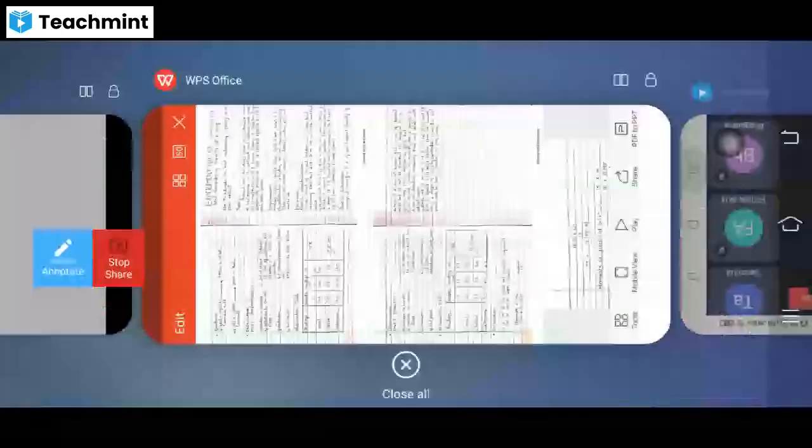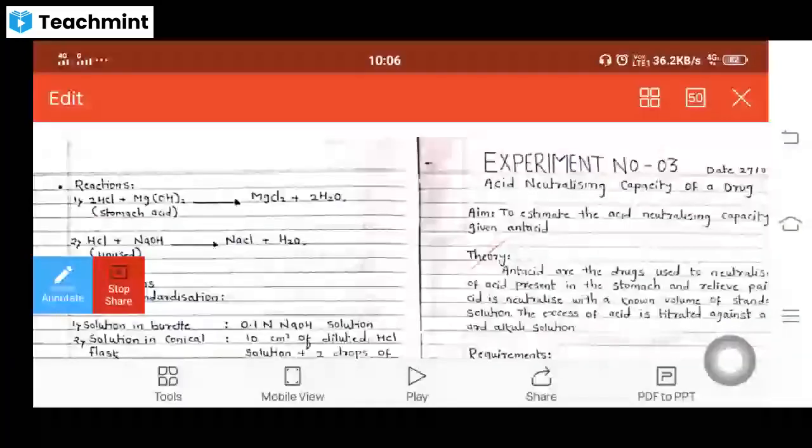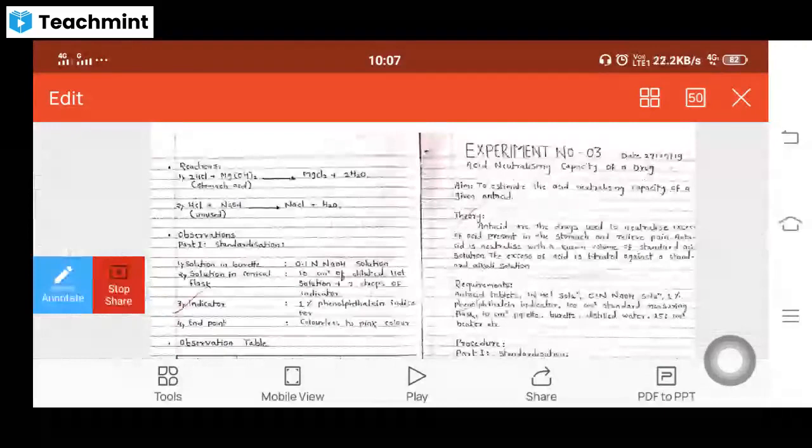Experiment number five: Deciding the acid neutralizing capacity of drugs. The antacid acts against the acid, so we need to understand the capacity of a particular drug to neutralize acids.